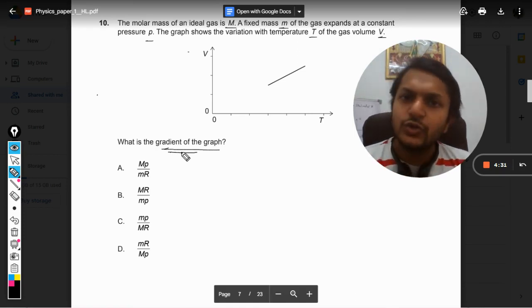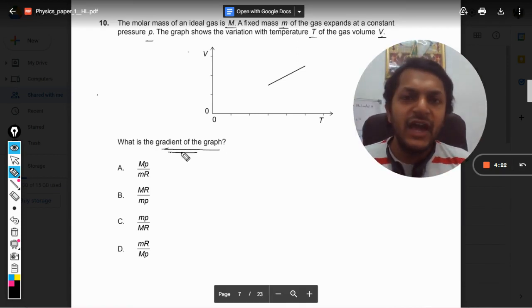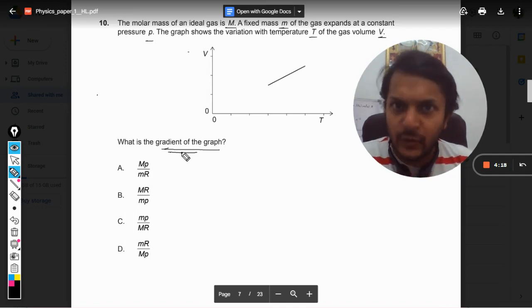So a V-T graph is given to us and we need to find the gradient of the slope. As I have told you in many other questions, whenever we want to find the gradient of the graph, we have to compare, we have to create an equation of a straight line and we will compare it with Y equals MX plus C.